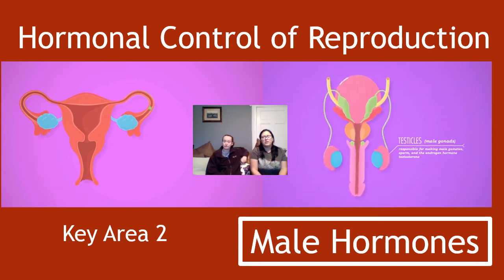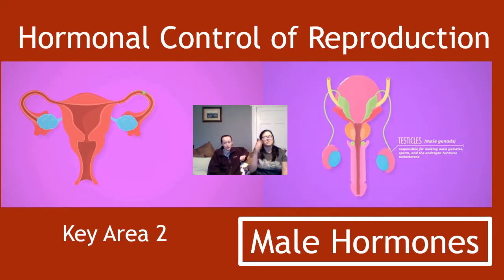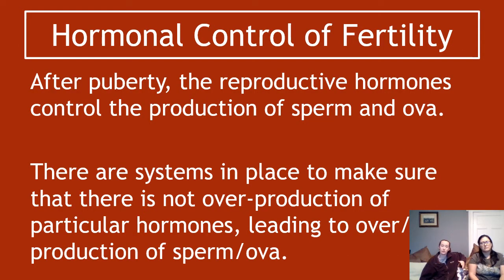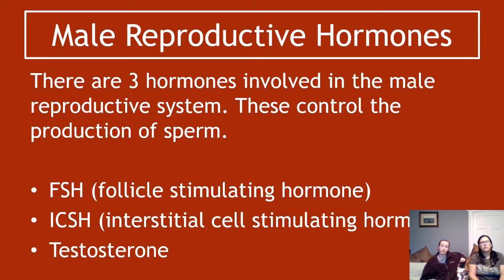Section two of key area two is on male hormones. There are three male hormones you need to know: where they're produced, what they do, and how their concentration is controlled inside the bloodstream. In terms of hormonal control of fertility, the reproductive hormones after puberty control the production of sperm and ova. The body has systems in place to ensure there is never an overproduction or underproduction of these gametes.